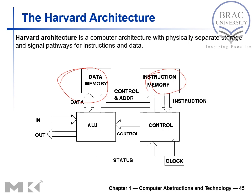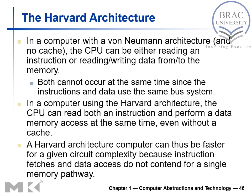However, in Von Neumann architecture, when performing a memory data operation, we cannot simultaneously fetch instructions. With Harvard architecture, we can access data memory and instruction memory in parallel. This parallel access is a key benefit of Harvard architecture. More details are covered in the following slides.